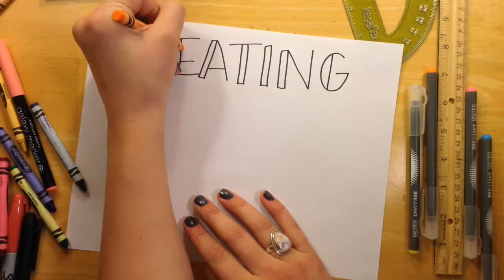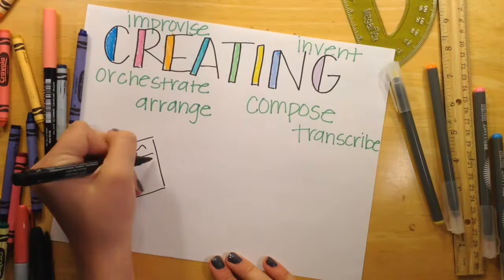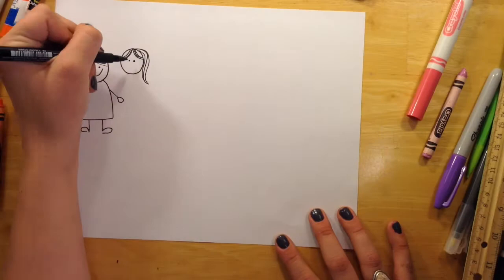Finally, we've reached creating, which is where the highest order thinking skills belong. We found that music is one of the best outlets that students can engage in higher order thinking skills like creating. Students are able to think and work creatively in a music setting through composing, improvising, transcribing, and more.